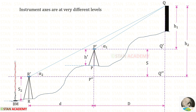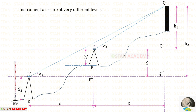We know that from station R we can take the staff reading, but from station P we cannot take the staff reading. The reason is that this is the maximum height of the staff — beyond this height the staff cannot be expanded. That is why it is known as instrument axes at very different levels.